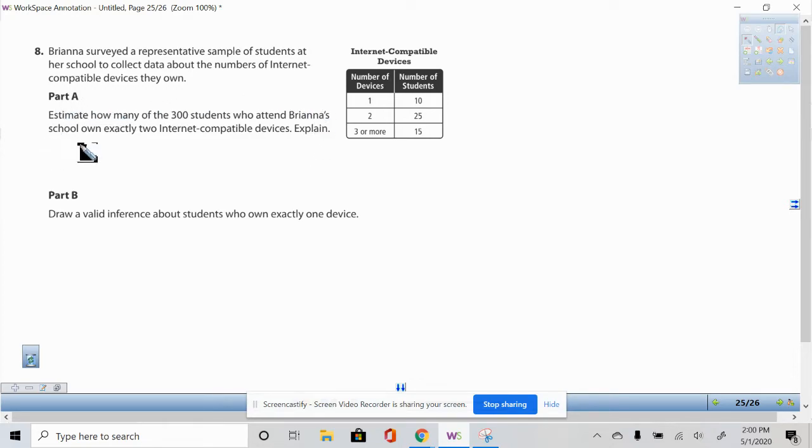So let's do part A. It says, estimate how many of the 300 students who attend Brianna's school own exactly two internet compatible devices.